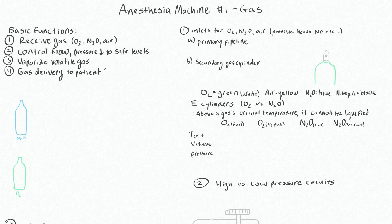First, there will be inlets on the machine for oxygen, nitrous, air, or something else like heliox, nitric oxide, or other gases. Your main supply of gas to the anesthesia machine is from the primary pipeline — this is your wall oxygen or your wall air — and it's delivered at a pressure of 50 PSI straight from the wall.